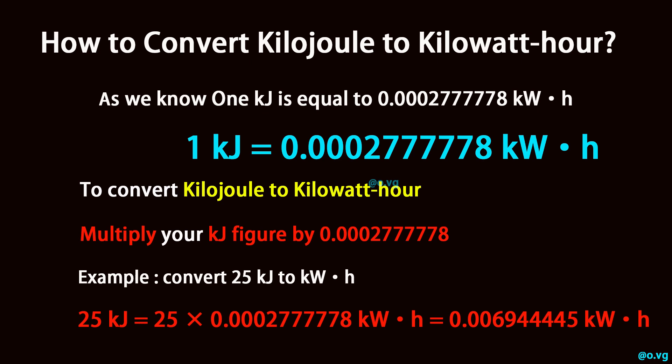1 kilojoule equals 0.0002777778 kilowatt hour. To convert kilojoule to kilowatt hour, multiply your kilojoule figure by 0.0002777778.